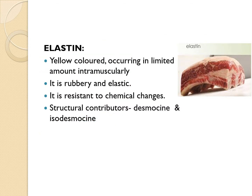Elastin is a yellow connective tissue occurring in limited amounts intramuscularly and in somewhat greater concentrations in deposits outside the muscle. During cooking, elastin is resistant to chemical change. The rubbery character of elastin accounts for its name. The two structural contributors are desmosine and isodesmosine.